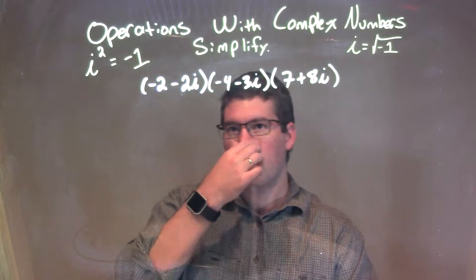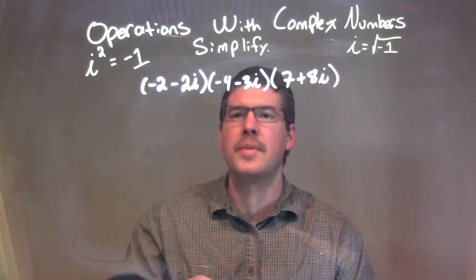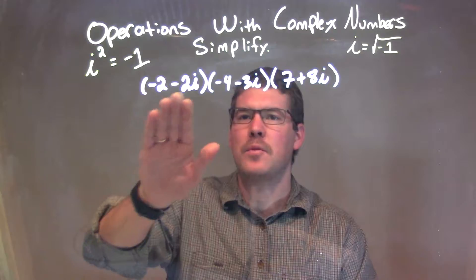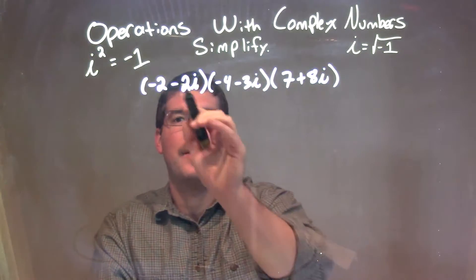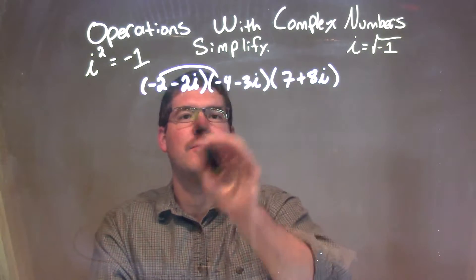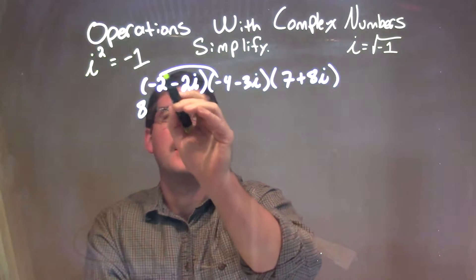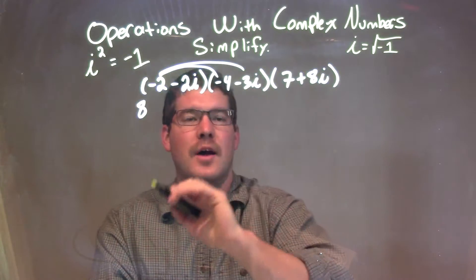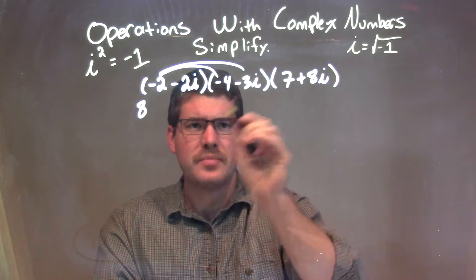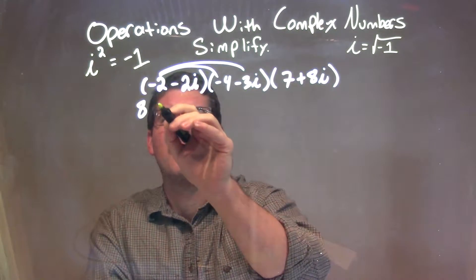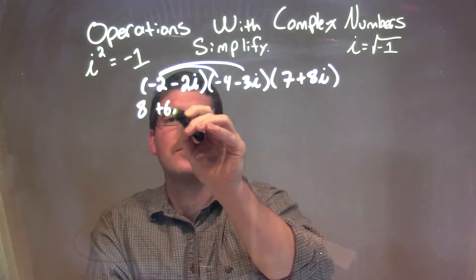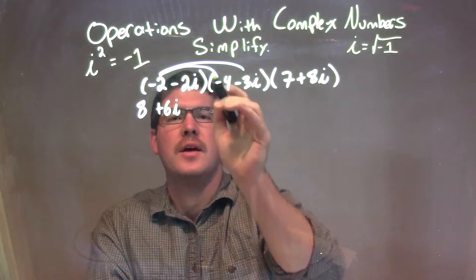What I'm going to do here is just deal with the first two parentheses and multiply them out. Negative 2 times negative 4 is a positive 8, and negative 2 times negative 3i is a positive 6i.